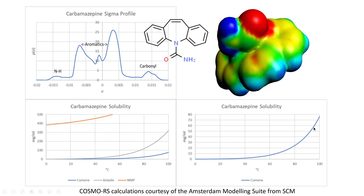Here's a full calculation for cumene — starting at 80 mg per mL and going down to nearly 0 mg per mL at low temperatures. So if you want to crystallize carbamazepine, it turns out that something like cumene is a good choice. The experimental data for this curve are found in the literature, and these COSMO-RS calculations are a pretty good way of doing it. That's how you would find the solubility aspects of a solvent.